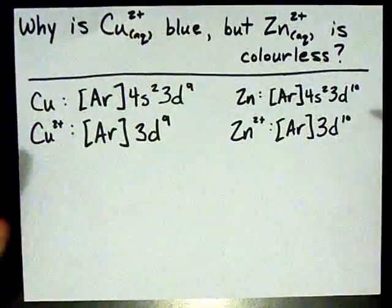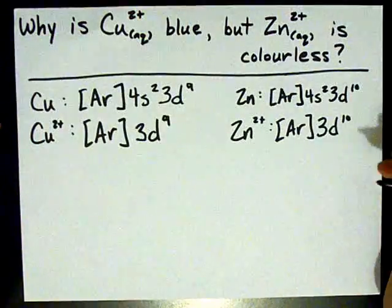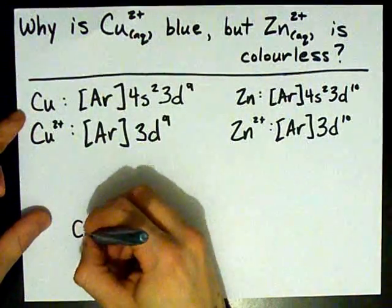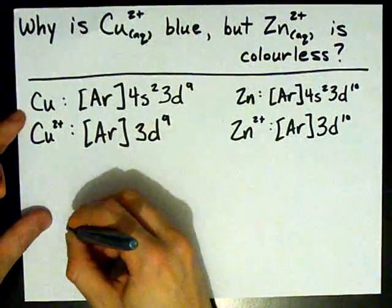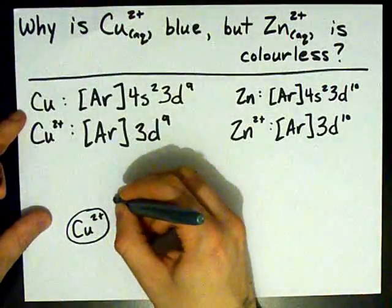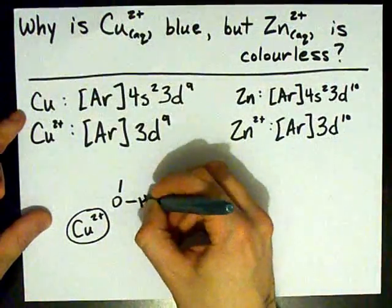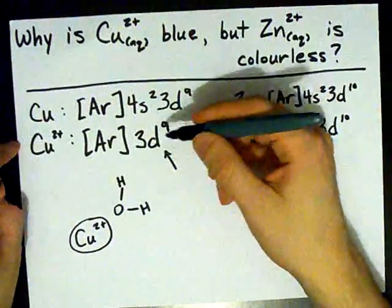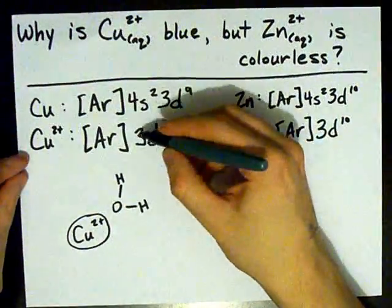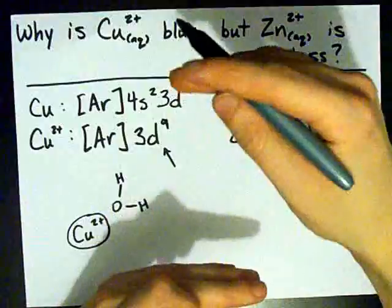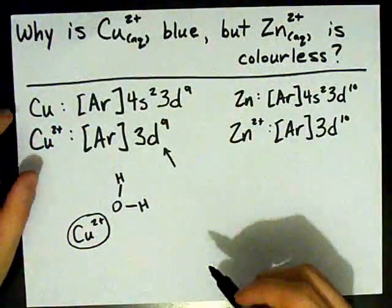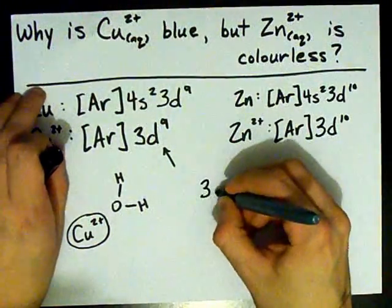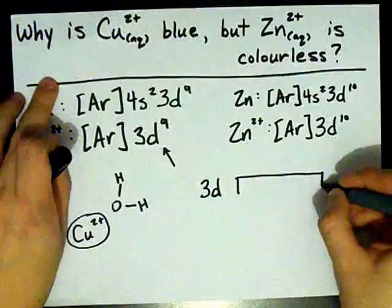Now, here comes the important bit. When a ligand attaches to a metal ion, what ends up happening is that the D level, or in this case, the 3d subshell of the third energy level, ends up splitting into two different sections. Normally, a 3d subshell looks like this.